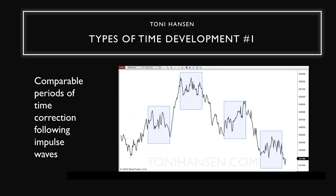In the category of time development, there are actually six different types I look at depending upon the strategy. An impulse move is simply a primary directional trend where momentum is stronger than average, and those are broken up by corrective periods. One of the types of time development I look for is how long a corrective period takes to form compared to an impulse move. We commonly see impulse moves of approximately the same size lasting approximately the same time, from larger time frames down to smaller ones.